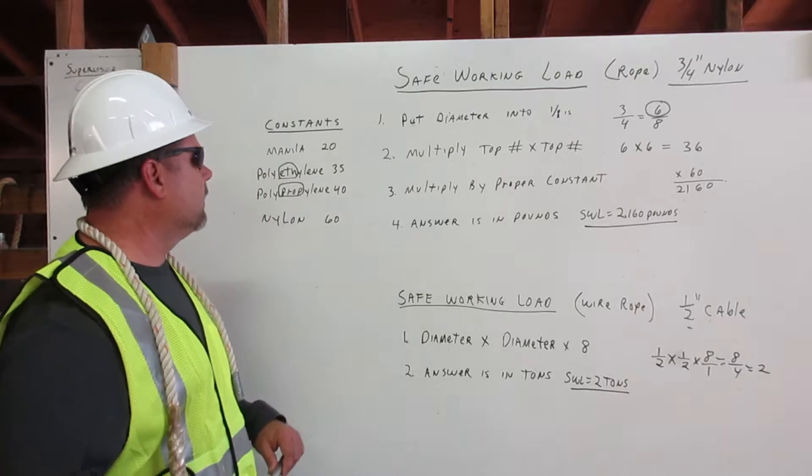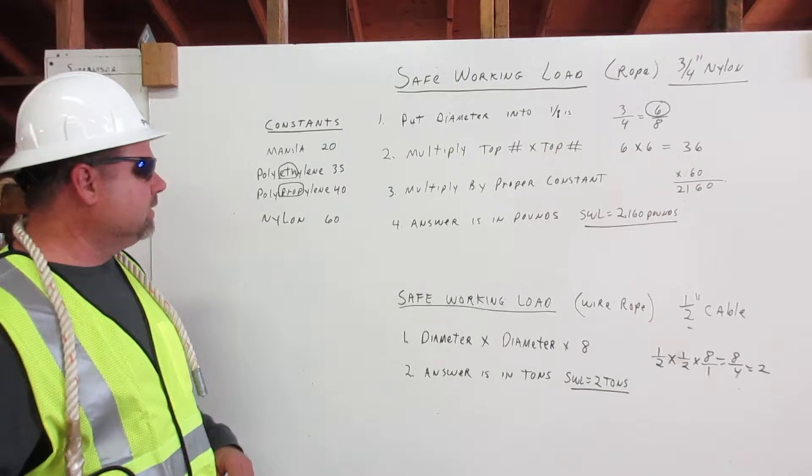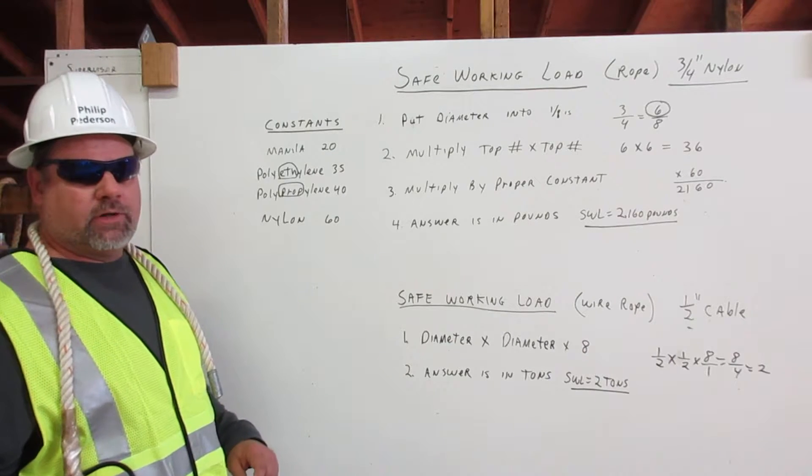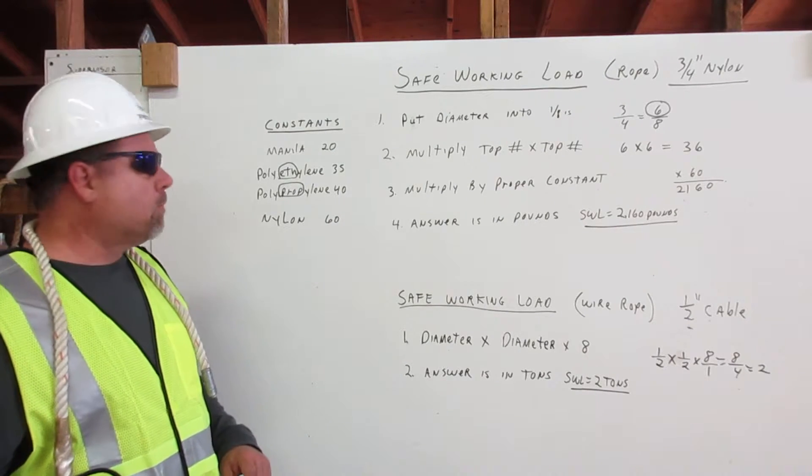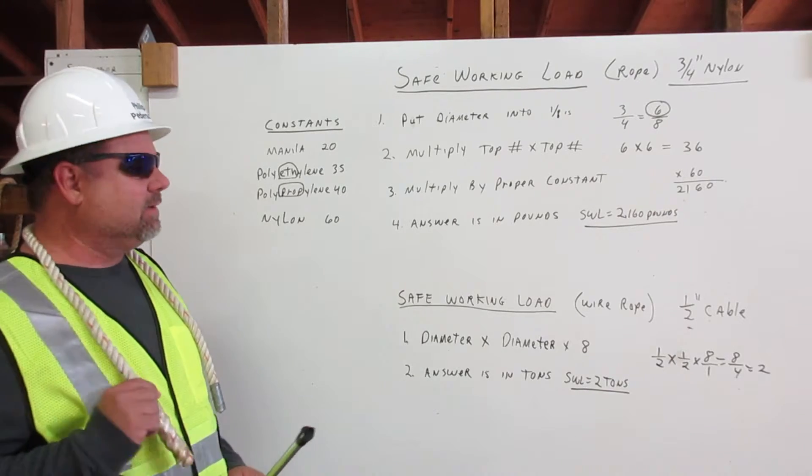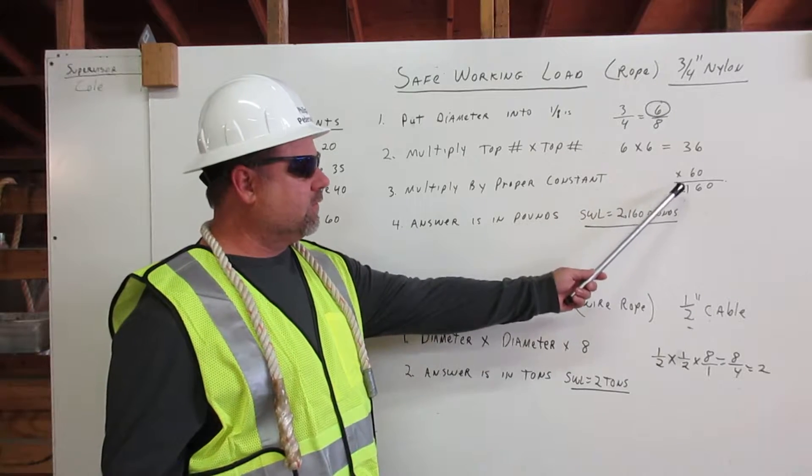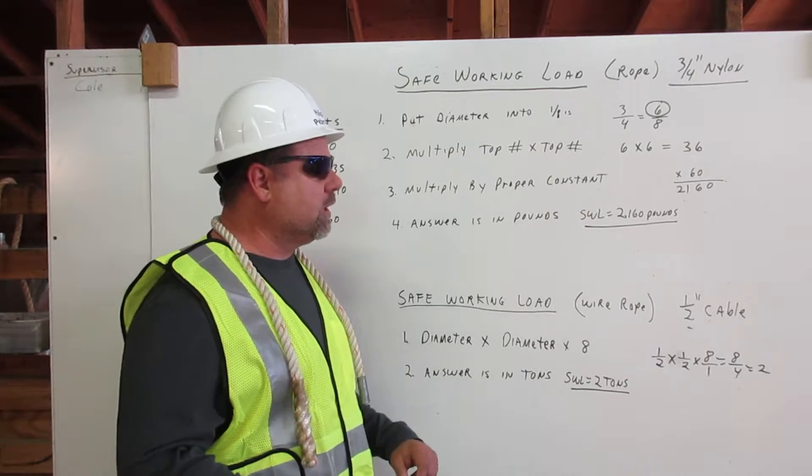Let's discuss the constants very quickly. Constants for manila rope are twenty, polyethylene thirty-five, polypropylene forty, and nylon sixty. This being three-quarter inch nylon, we'll multiply the thirty-six by sixty, gives us two thousand one hundred sixty.